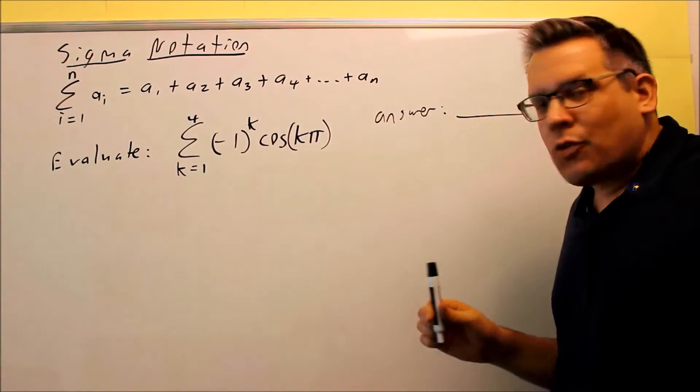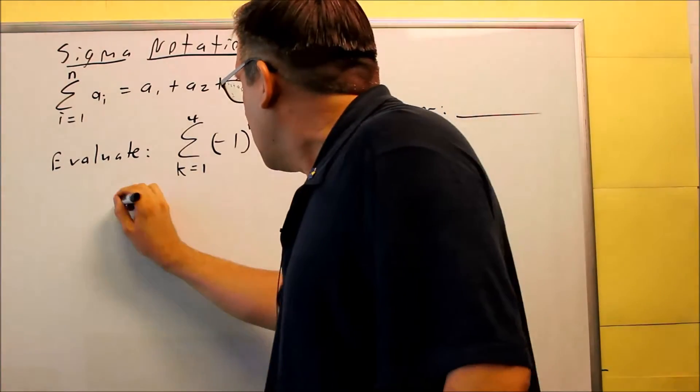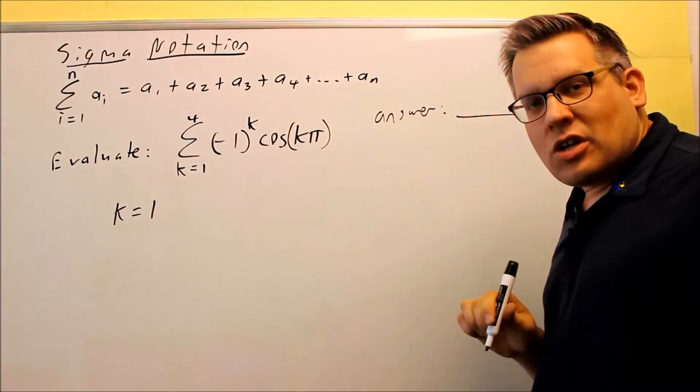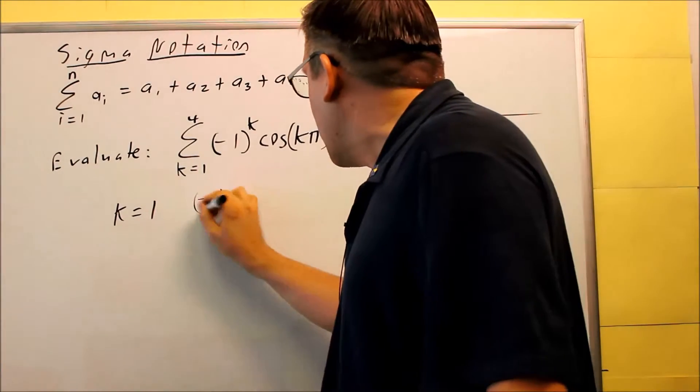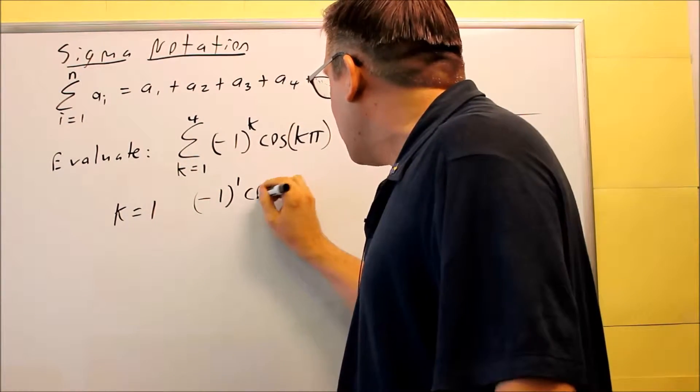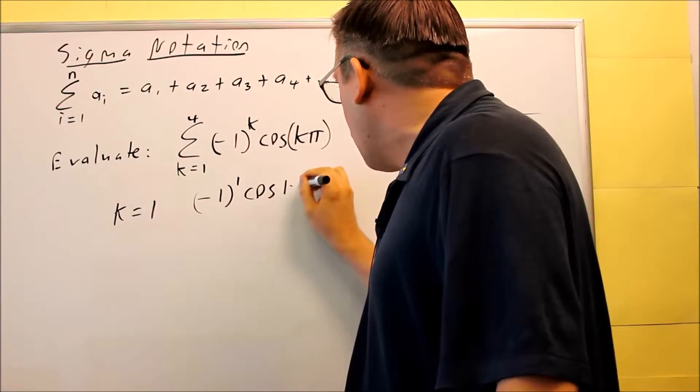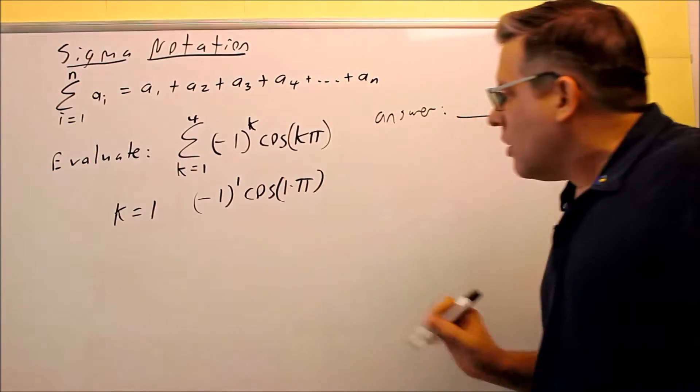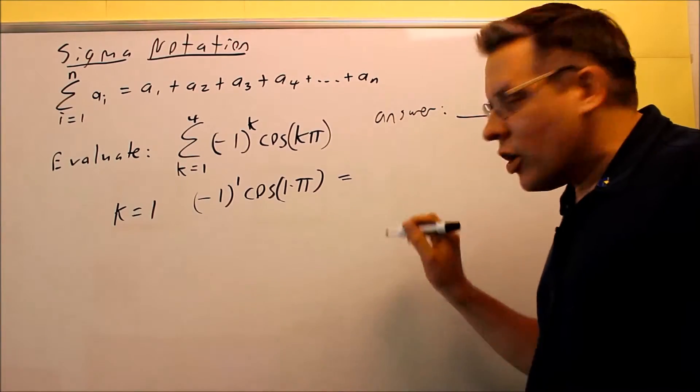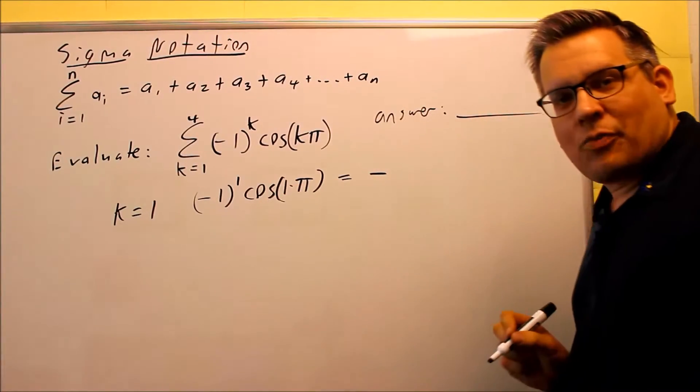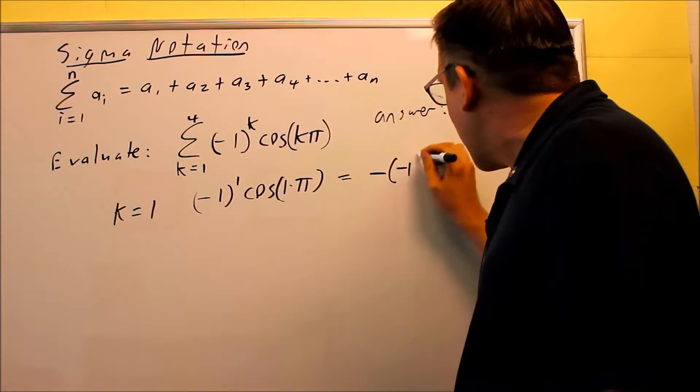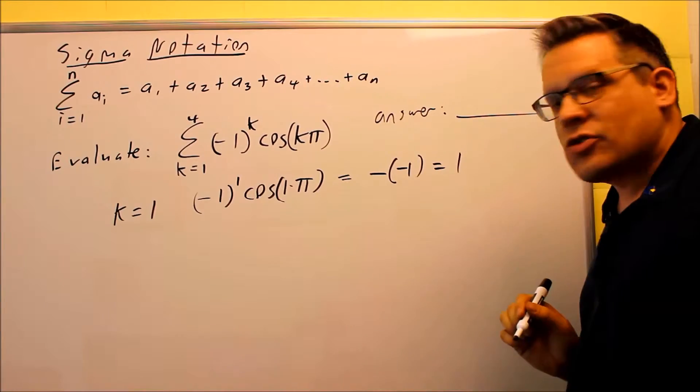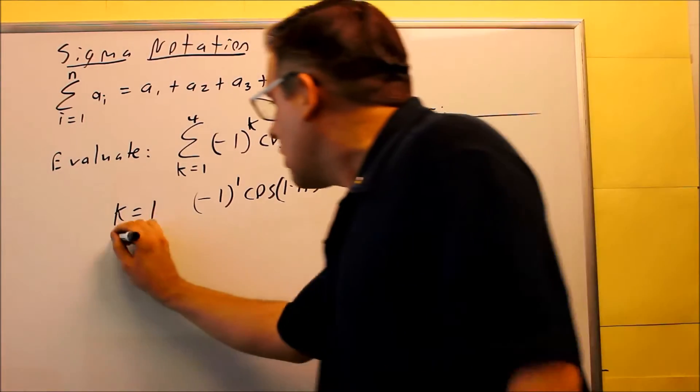Now this one is another one. I want to start out with k equal to 1. I want to put 1 into every place you see a k on this one. So I have negative 1 to the 1, and then cosine of 1 times π. And then I just want to evaluate that. So negative 1 to the 1 gives you a negative, and then you have cosine of π. That's negative 1 from your unit circle. And so your first answer is going to be positive 1.